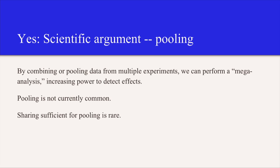Another scientific argument for sharing is pooling. We want to be able to combine or pool data from multiple experiments. And then in this way, we could perform what's called a mega analysis, not a meta analysis. A meta analysis, you look at the findings of various papers and do a particular kind of statistical reasoning over the findings of the papers. Here, we want to actually have the data from different studies and pool that data and do one large analysis to increase the power to detect effects and be able to study different kinds of things that might have been out of the hands of particular researchers. Pooling is not currently common. It's extraordinarily difficult for all the barriers that are involved in data sharing, but it's also very, very difficult, even if you had the data, to determine whether it could be pooled from a scientific or statistical point of view. So sharing sufficient for pooling is extraordinarily rare currently.